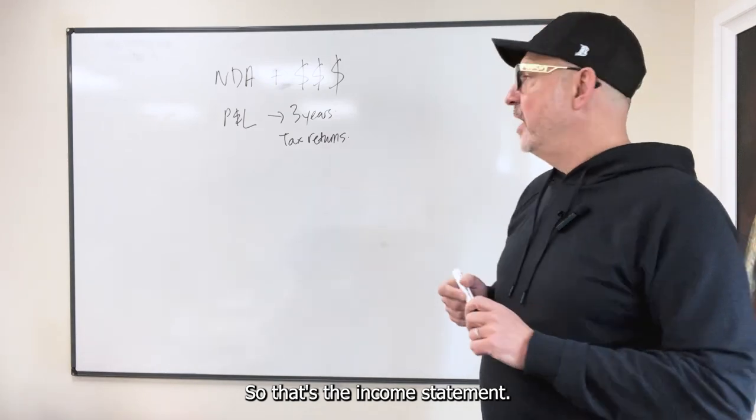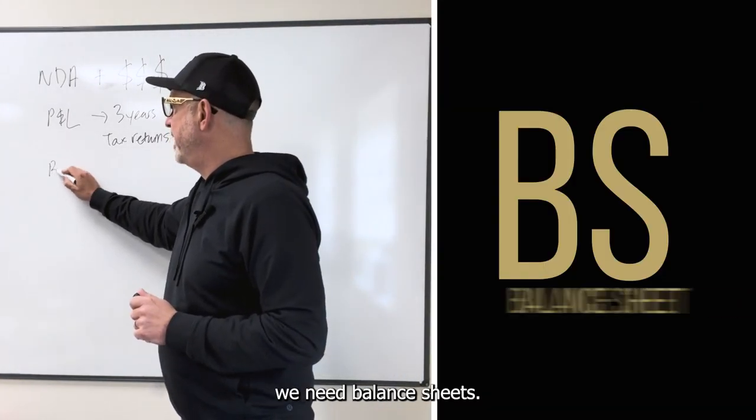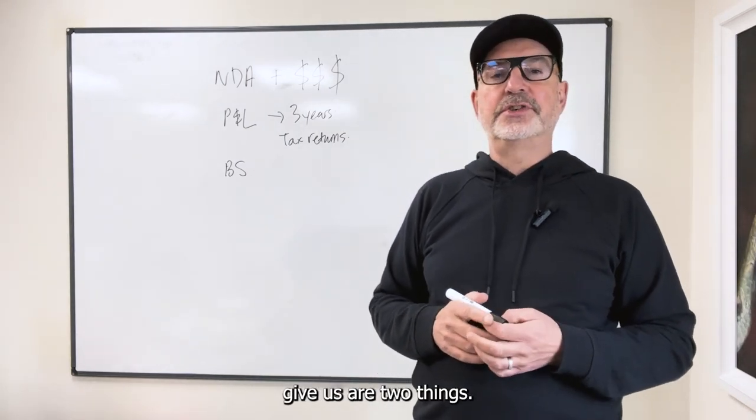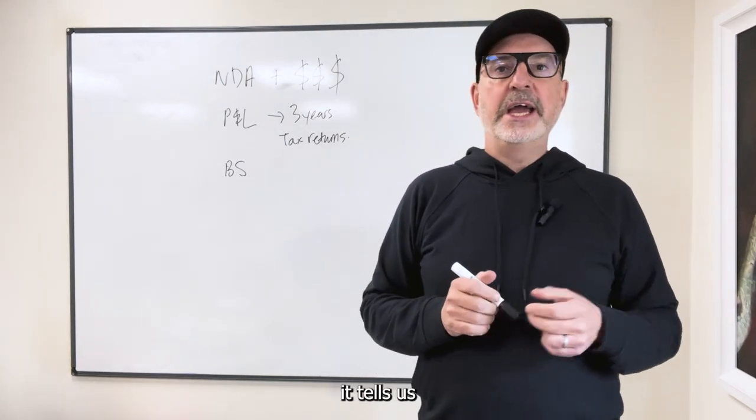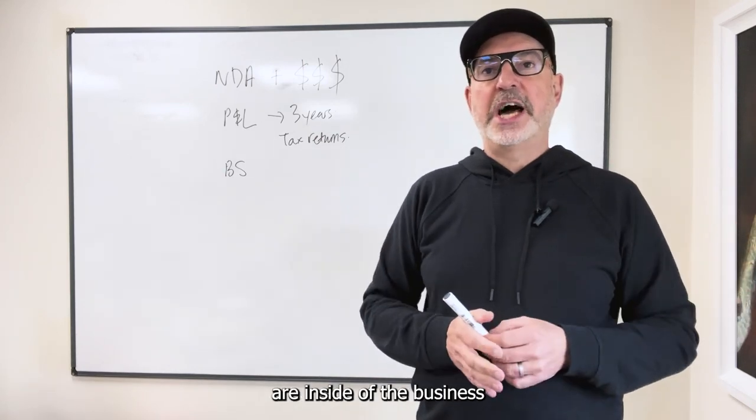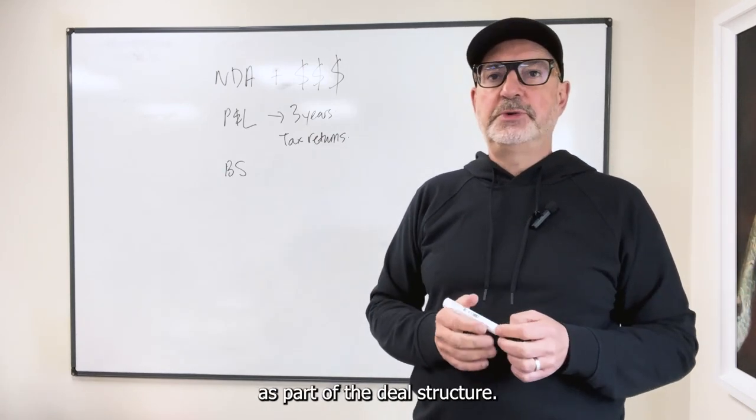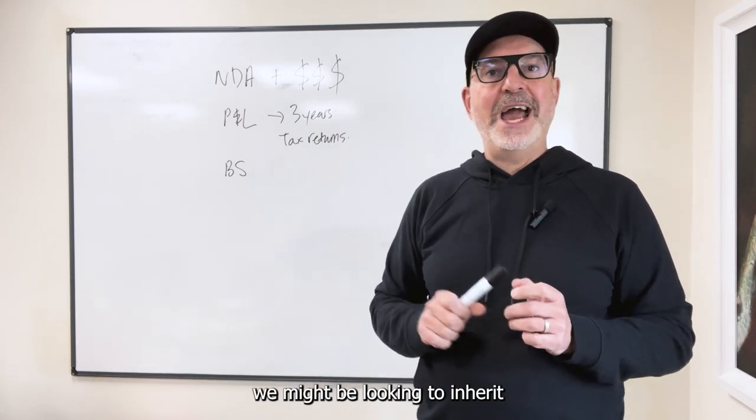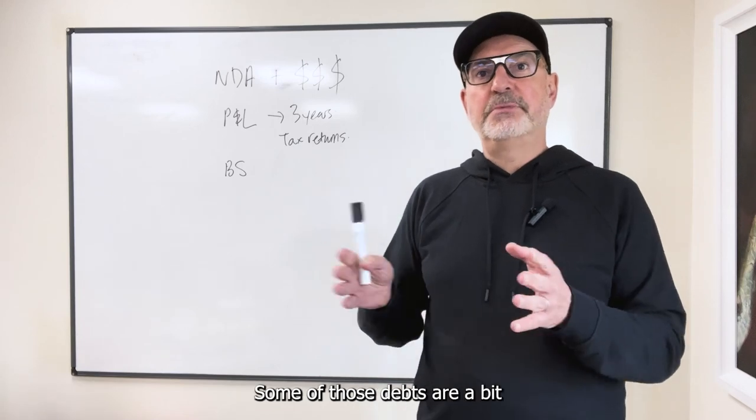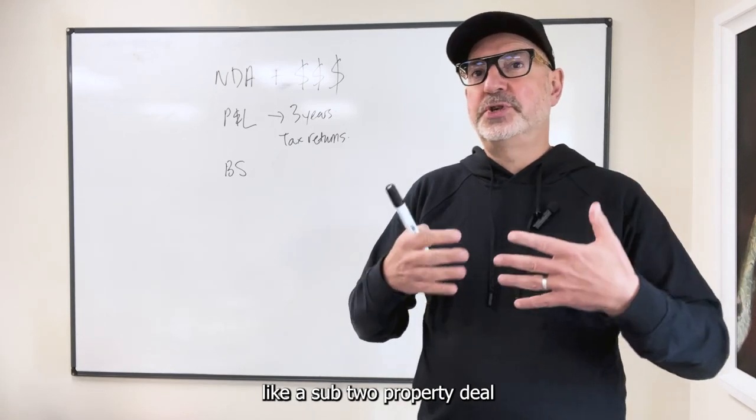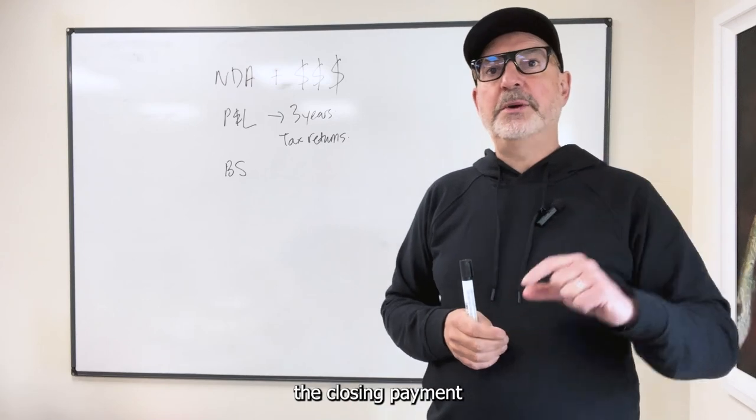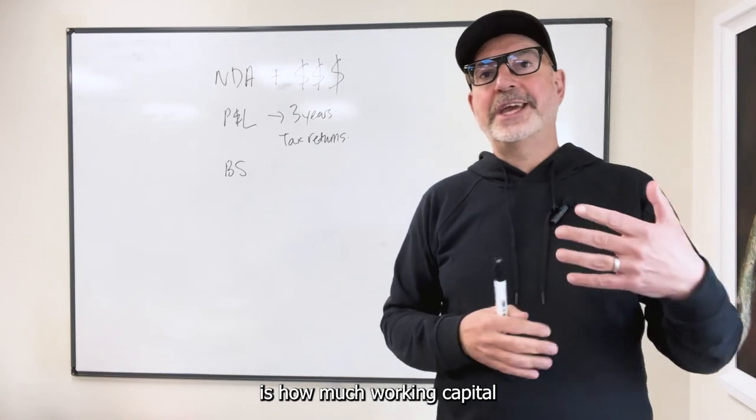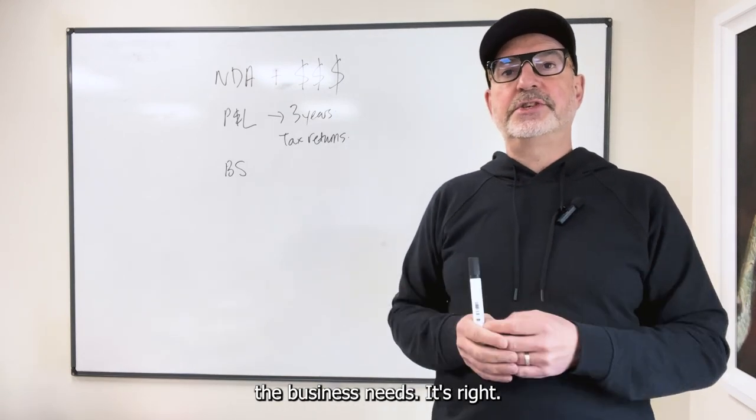So that's the income statement. The other thing that we need is balance sheets. So we need balance sheets for the last three years as well. And what balance sheets give us are two things. Number one, it tells us what assets and liabilities are inside of the business and potentially as part of the deal structure. So if you've got it, we're talking about that tomorrow, we might be looking to inherit some of those liabilities, some of those debts, a bit like a subject-to property deal, so that we can lower the closing payment and lower the valuation.